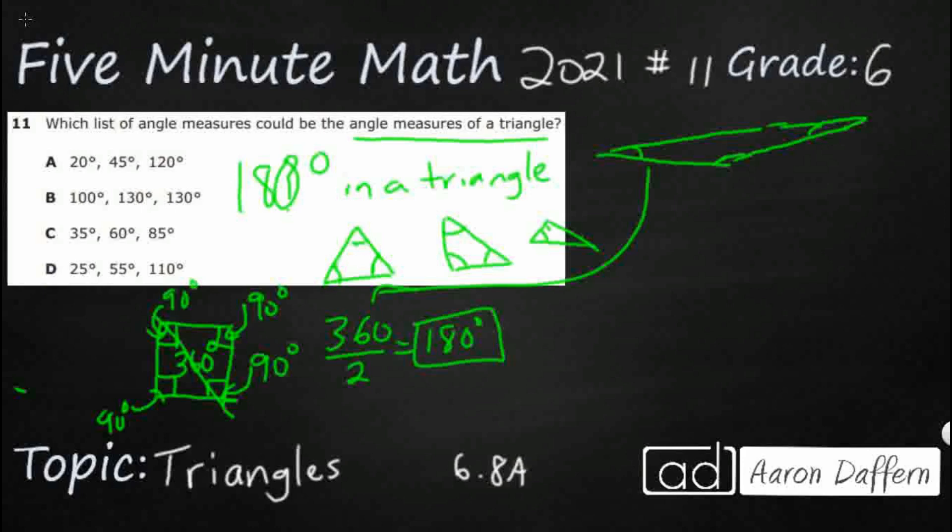So all we need to do here is add these up, and let's see what they make. So I've got A is 120, 45, and 20. Oh, and that's going to be close. That's going to be 185. That does not exist.